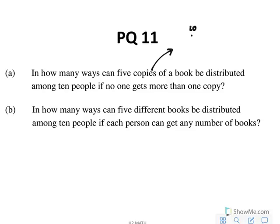So basically for part a, out of the ten people we're actually choosing five to receive one book each. That's the answer to the question, so it's just 10 choose 5, which is 252.